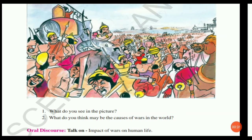Children, look at the picture and answer the questions that follow. The first question is: what do you see in the picture? The war is going on — soldiers are fighting one another. They have straps, elephants are also fighting, and horses are also there in the battlefield. The second question is: what do you think may be the causes of wars in the world?